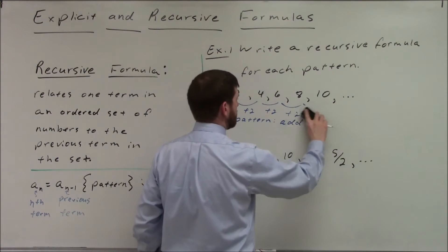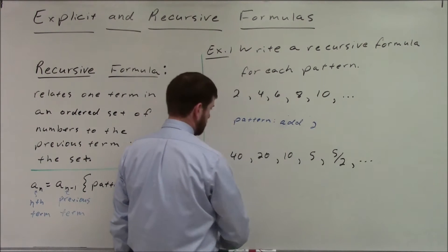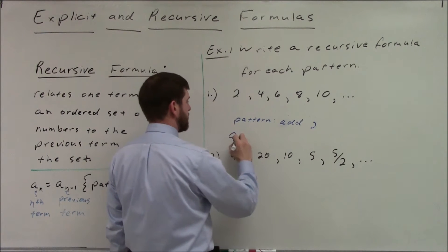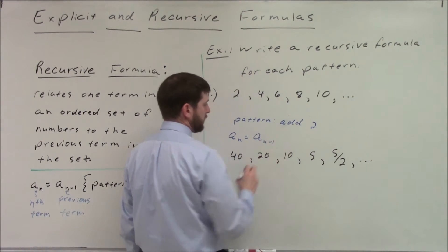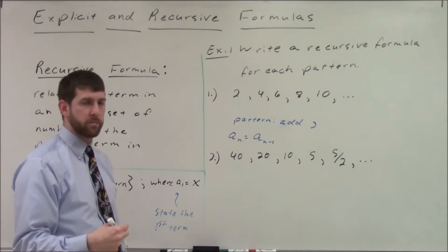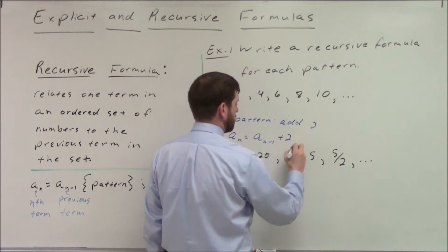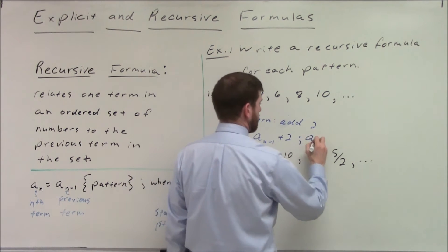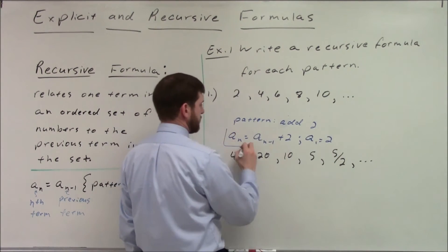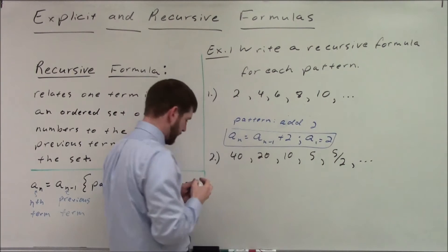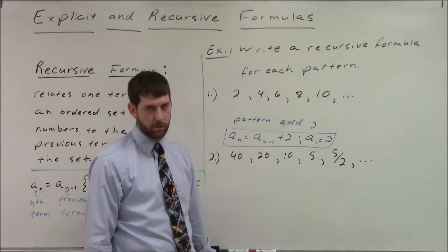So my pattern is add 2 each time. Now let's write that as a recursive formula. I would say a sub n equals a sub n minus 1, plus 2 — that's the term one before n. And then I've got to tell them where to start: a sub 1, which is the first term, is 2. I can recreate this list of numbers by starting at 2 and adding 2 to every single number.